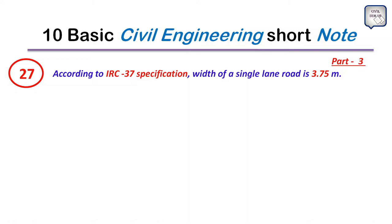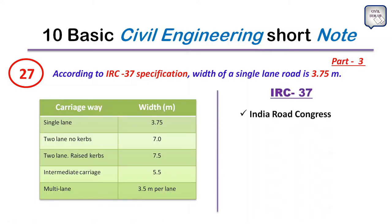Point 27: According to IRC 37 specifications, the width of a single lane road is 3.75 meters. IRC stands for Indian Road Congress. The carriageway widths are: single lane — 3.75 m; two lane no curbs — 7 m; two lane raised curb — 7.5 m; intermediate carriageway — 5.5 m; and multi-lane — 3.5 m per lane. This is an important table to remember.